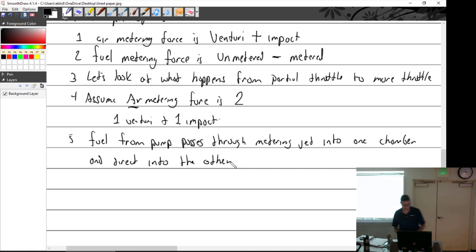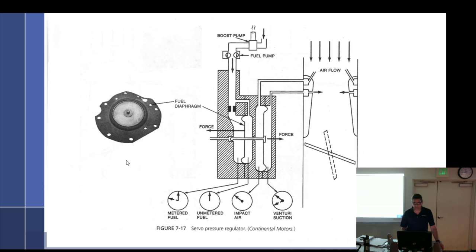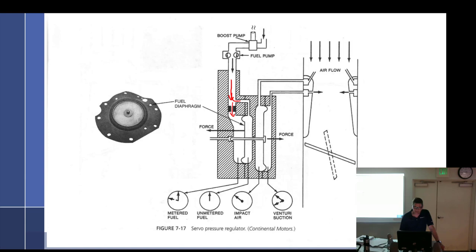Just so we're all on the same page: fuel comes in, goes through the metering jet into one chamber and directly into the other. Unmetered fuel is the fuel inlet pressure.